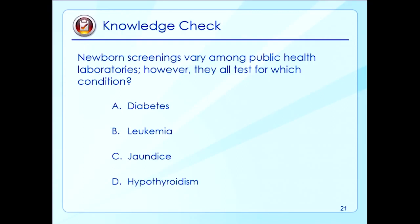Newborn screenings vary among public health laboratories. However, they all test for which condition? The options are: A, diabetes; B, leukemia; C, jaundice; and D, hypothyroidism. The correct answer is D, hypothyroidism.